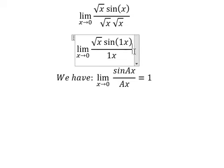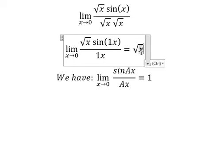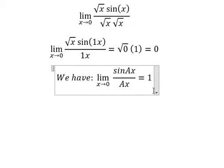In this case, we have the square root of zero multiply by number one, we have zero. This is the end.